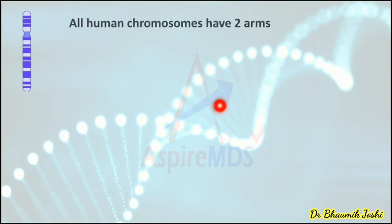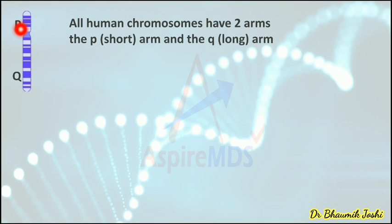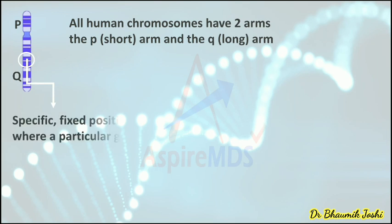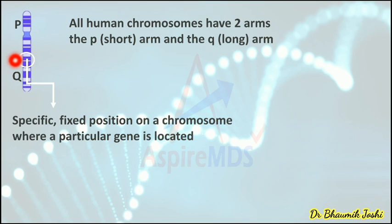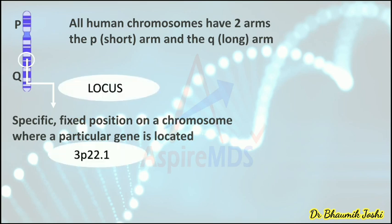Chromosomes have two arms: one is the short arm and the other is the longer arm. The shorter arm is called the P arm (petit) and the longer arm is the Q arm. On a particular arm, at a particular place, we can find a gene. A gene is always located at a specific fixed place — this specific fixed position on the chromosome is called the locus. When reading, you may see genes described as located at, for example, 3p22.1 — this notation tells us the locus of that gene.